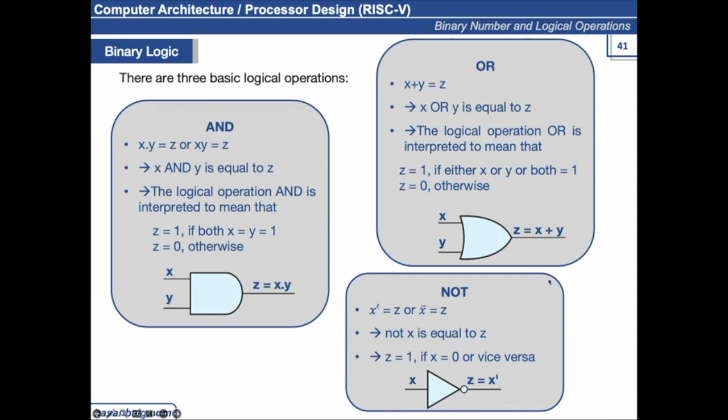Similarly, in NOT gate, whatever the input is, the value is inverted. If the input is zero, the output is one. If the input is one, the output is zero. And it is represented with this triangular followed by a bubble symbol.